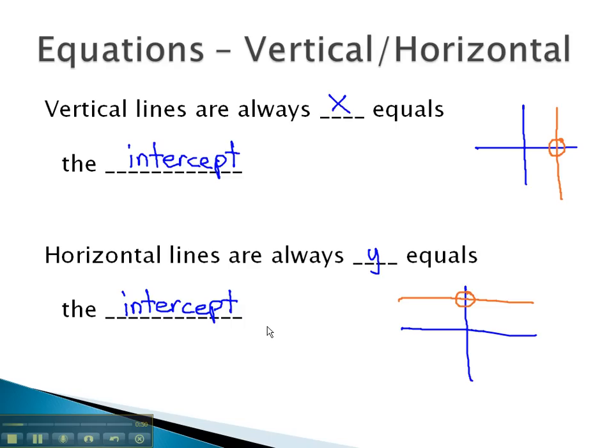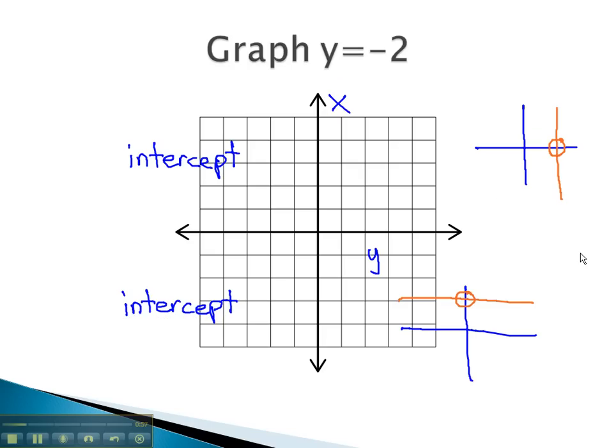If we know that vertical and horizontal lines are always the variable equals its intercept, we can quickly match equations and lines together.